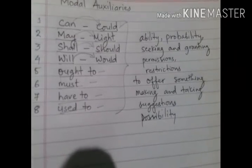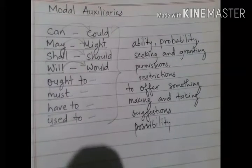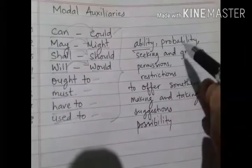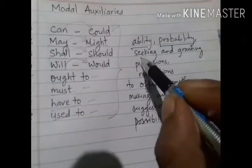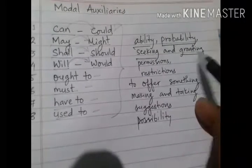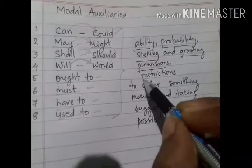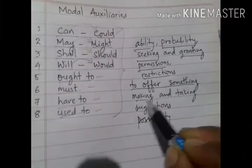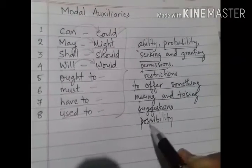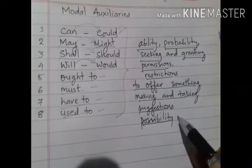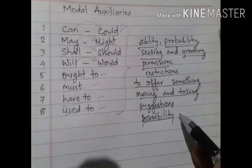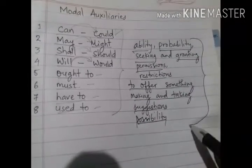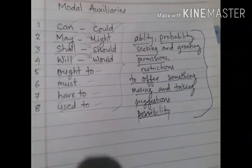These modal auxiliaries are mostly used to express ability of actions, probability of actions, seeking and granting permissions, restriction of actions, to offer something, making and taking suggestions, possibilities of actions, and so on. So now we will understand all these in detail one by one.